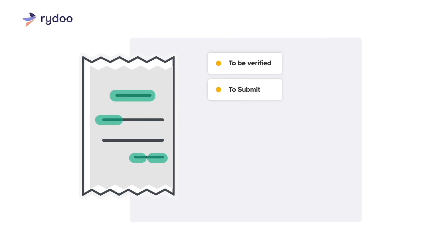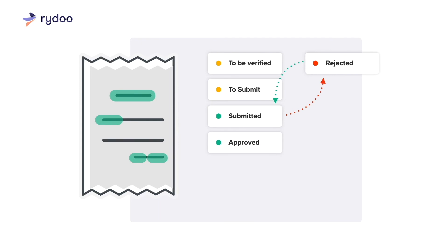Your expense can then be submitted and will remain that way until your approver takes action. If an expense is Rejected, you can open the expense to see the rejection reason, modify and resubmit if needed. Once approved, your expense will undergo a second level of approval with the status Controlled — the second level of control is optional within your company settings. Your expense is in its final stages when it shows the status Reported, indicating that the expense was processed and awaiting reimbursement.